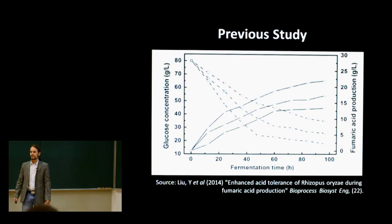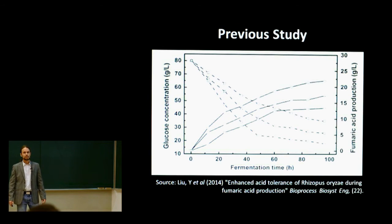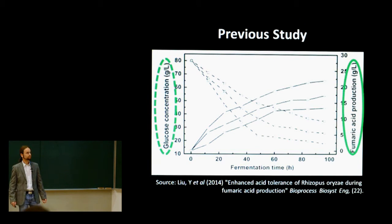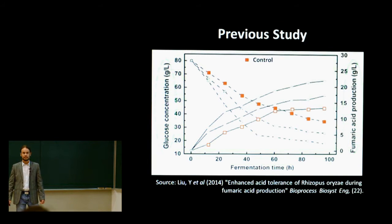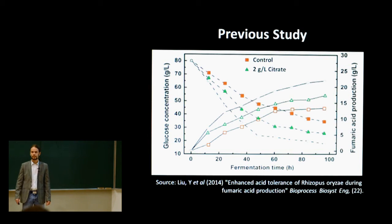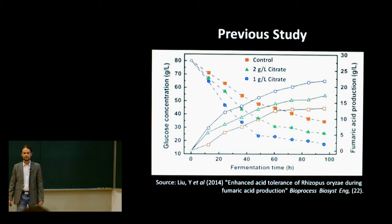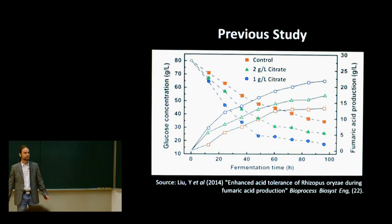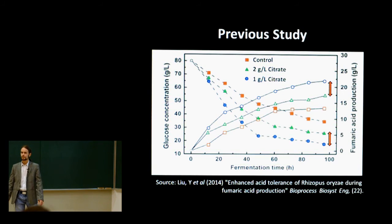A group of Chinese scientists studied this fungus and the results they found are presented here. The decreasing dashed lines represent the glucose concentration, and the increasing solid lines the fumaric acid concentrations. The red squares represent the control — no citrate added. The green triangles represent the 2 gram per liter citrate concentration, and the blue circles represent the 1 gram per liter citrate concentration. From this data, it is clear that with a small addition of citrate, the glucose is consumed a lot faster, and as a consequence more fumaric acid is produced. It would also seem that there is an optimum citrate concentration somewhere between 1 and 2 grams per liter, or perhaps even less than 1 gram per liter citrate in solution.